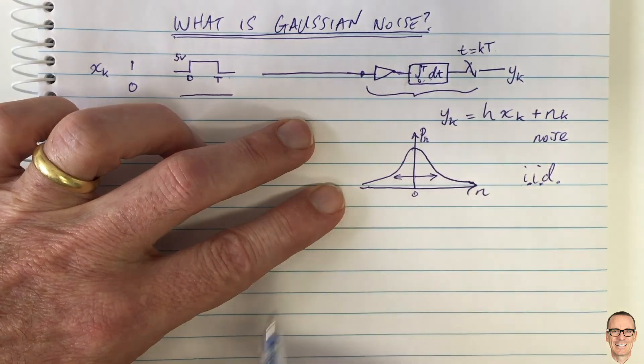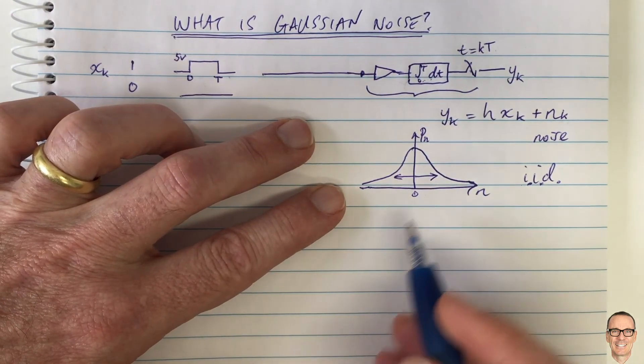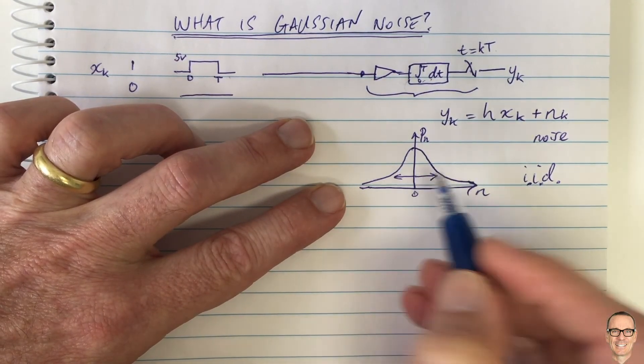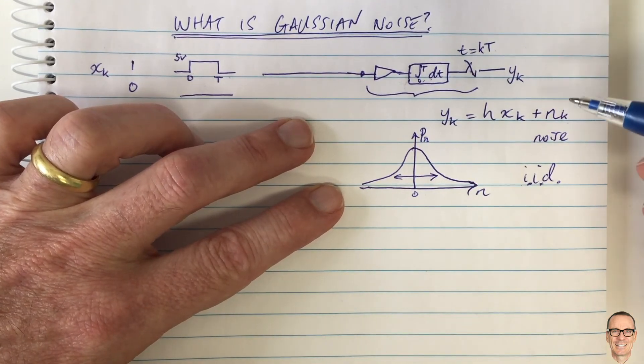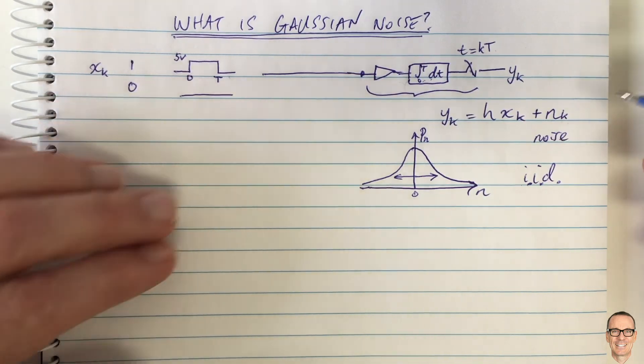Gaussian shape here. So they all have the same variance. So it's most common situation in communications is to have IID Gaussian noise.